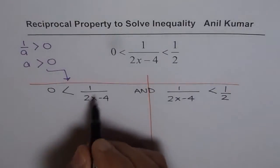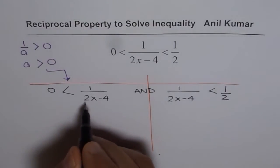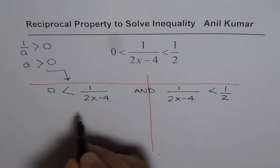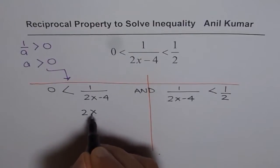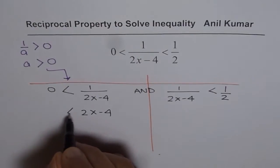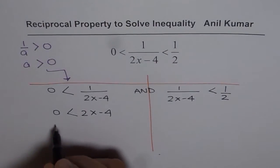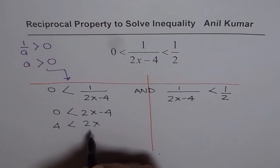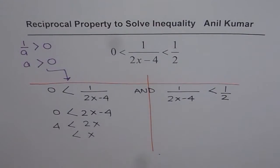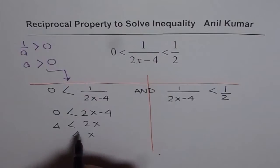If 1/(2x - 4) > 0, then 2x - 4 > 0. Bringing 4 to the other side, we have 2x > 4, or x > 4/2, which is x > 2.